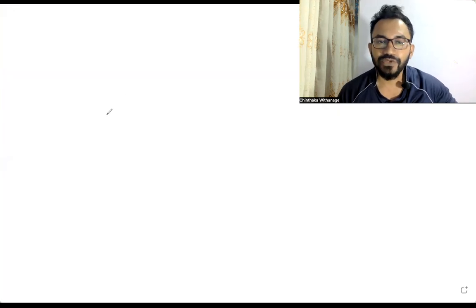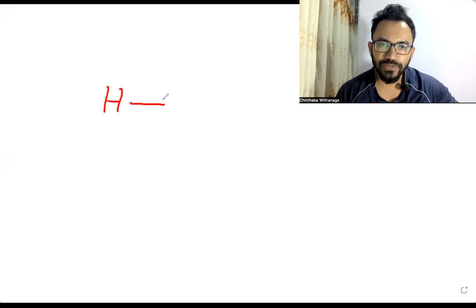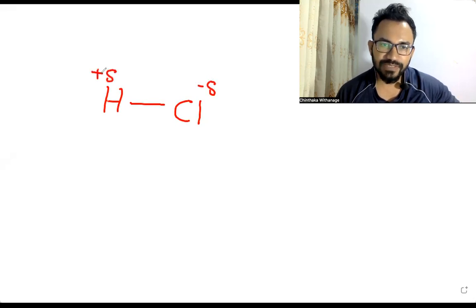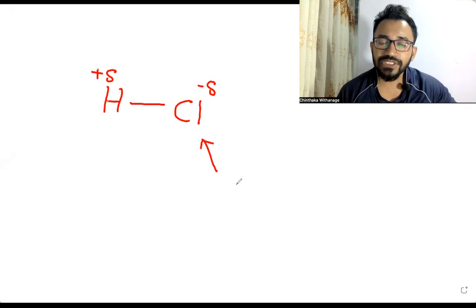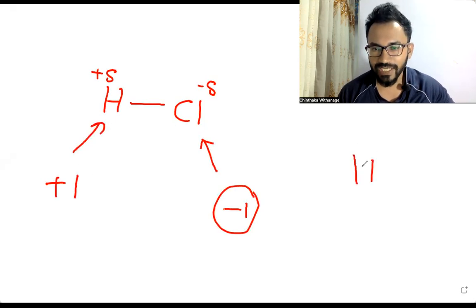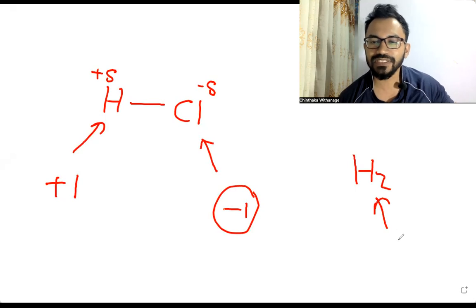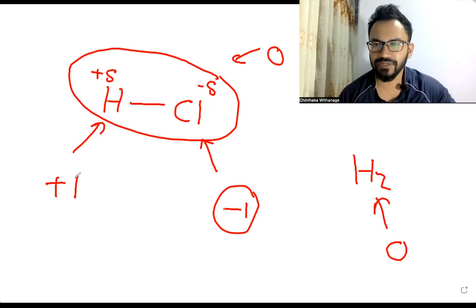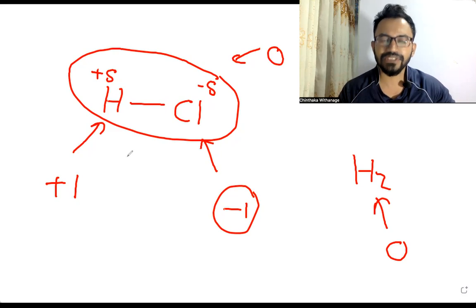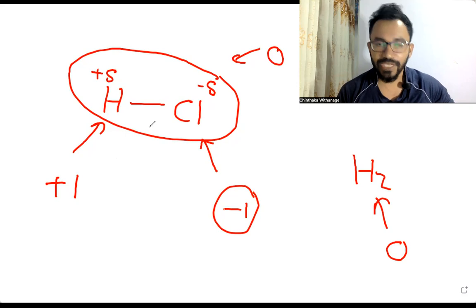To draw the HCl molecule, we put delta minus and delta plus marks — delta minus on chlorine. If I ask what the oxidation number of chlorine is, you need to know it's minus one, and for hydrogen it's plus one. HCl itself as a molecule has an overall oxidation number of zero. These values come from electronegativity.